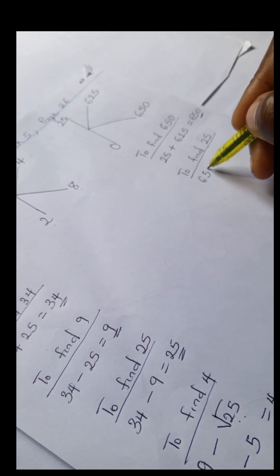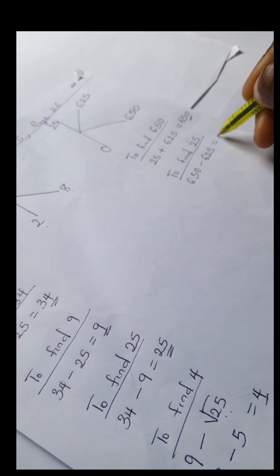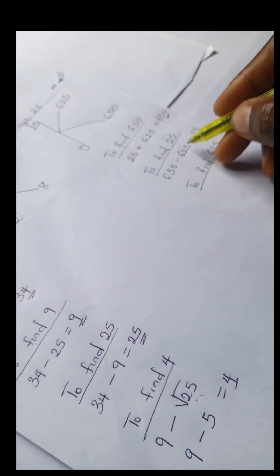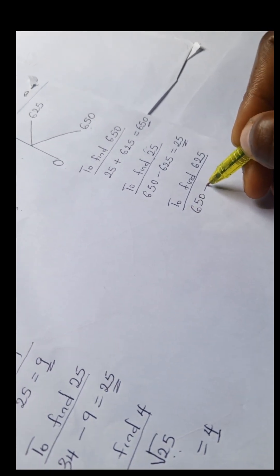And to find 25, we have 650 minus 625. And to find 625, we have 650 minus 25, and that gives us 625. And lastly, we have to find zero.